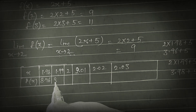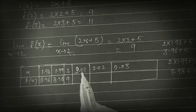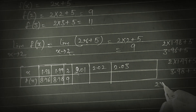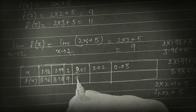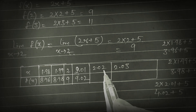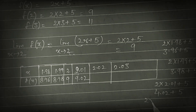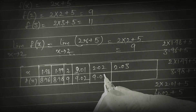If we put x = 1.99, we get approximately 8.98. If we put x = 2.01, so 2×2.01 + 5 = 4.02 + 5 = 9.02. If we put x = 2.02, it gives 4.04 + 5 = approximately 9.04.